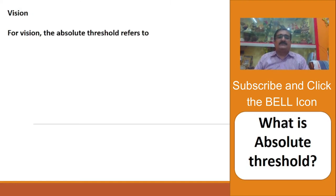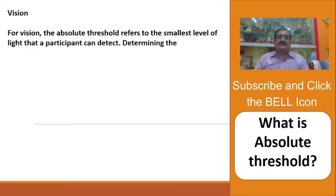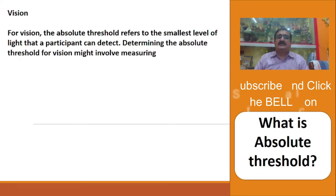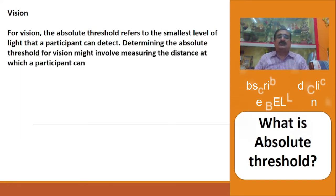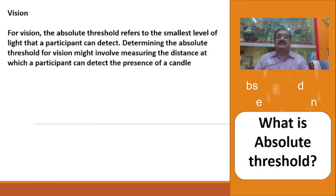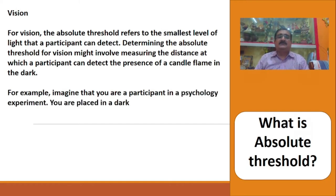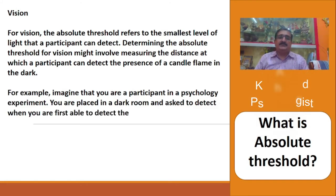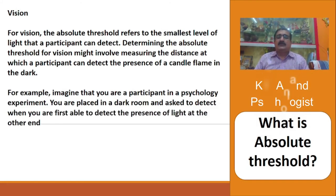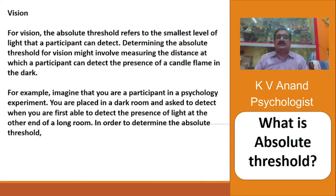In the case of vision, the absolute threshold refers to the smallest level of light that a participant can detect. Determining the absolute threshold for vision might involve measuring the distance at which the participant can detect the presence of a candle flame in the dark. For example, imagine that you are a participant in a psychology experiment — you are placed in a dark room and asked to detect when you are first able to detect the presence of a light at the other end of the room.